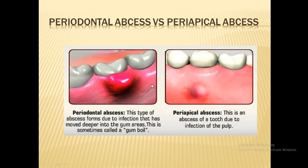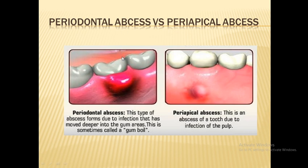Let's differentiate between primary periodontal and primary pulpal lesions. In the case of primary periodontal, in terms of history, there is no preceding toothache — no pain before the lesion develops. In the case of pulpal lesions, the patient often comes with real pain — a toothache that precedes the infection. Regarding percussion: in periodontal lesions, the tooth is tender to percussion especially laterally, meaning when you tap the tooth from the side, the patient will feel pain.